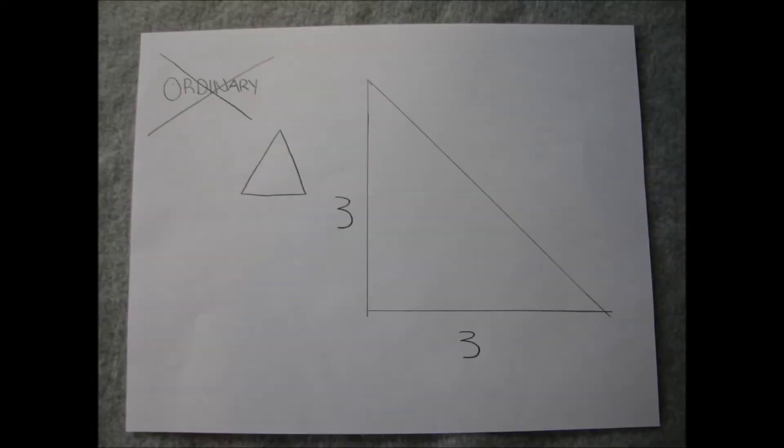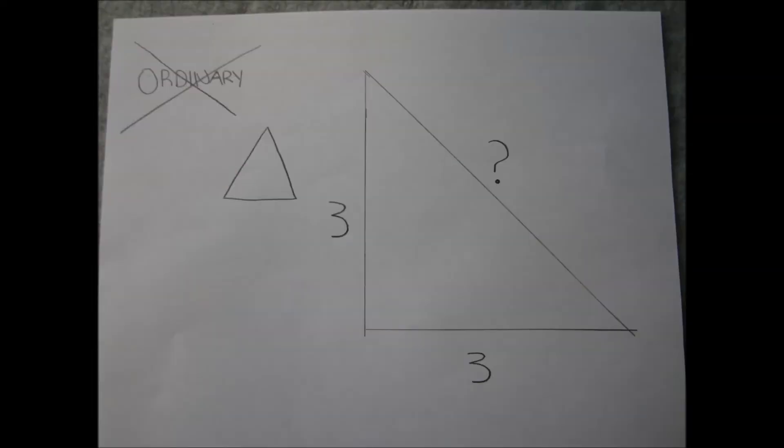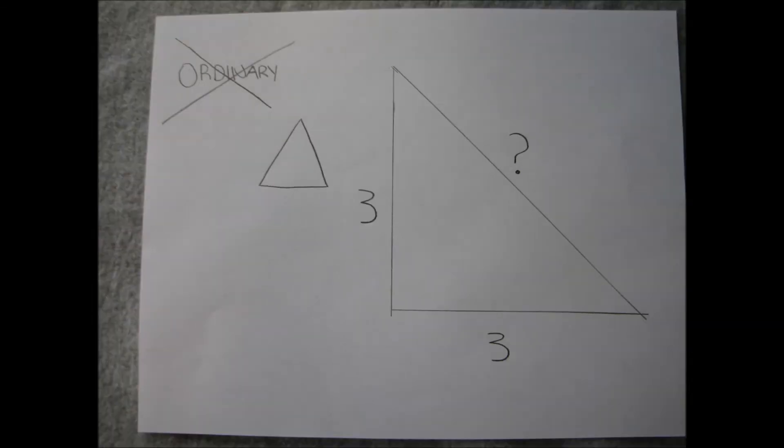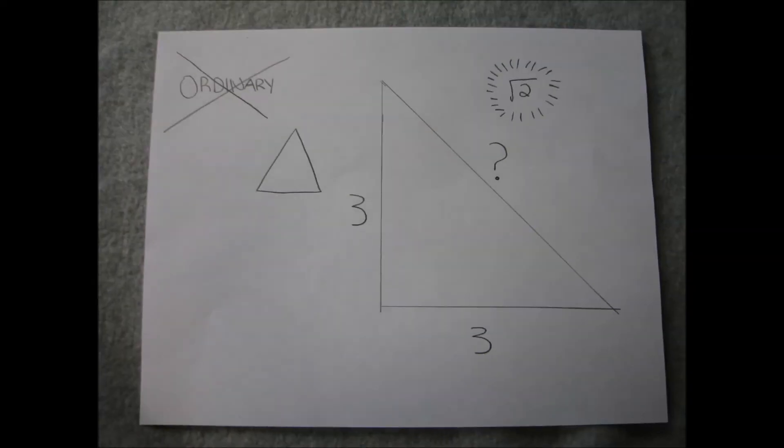The legs are 3 each, so how do you find the hypotenuse? Square root two.